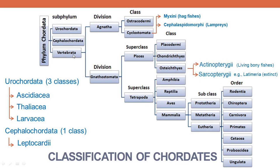In the case of Vertebrata, they are divided into two divisions. Agnatha — meaning no jaw bond — jawless organisms; and Gnathostomata — meaning organisms with jaw bonds. Jawless organisms have been divided into two classes: Class Ostracodermi, which are extinct, and Class Cyclostomata. As per the new classification, Cyclostomata are divided into two classes: Class Myxini, which contains hagfishes, and Class Cephalaspidomorphi, which contains lampreys.